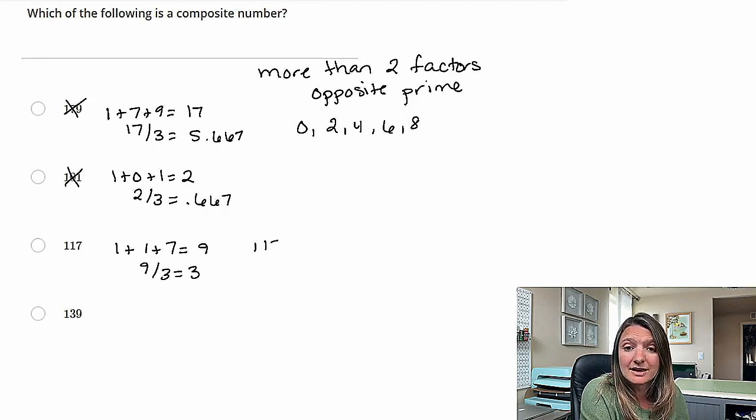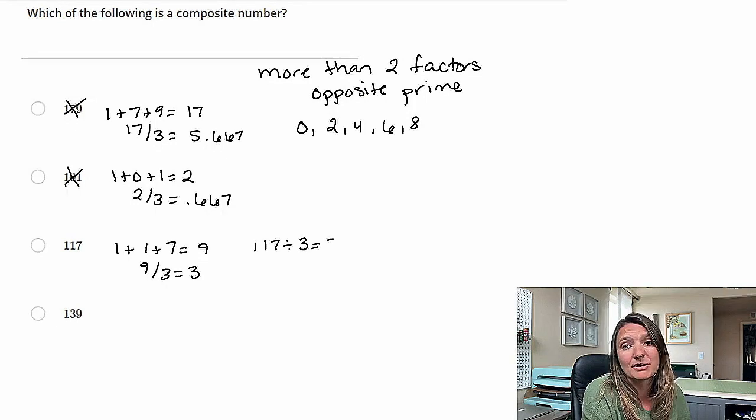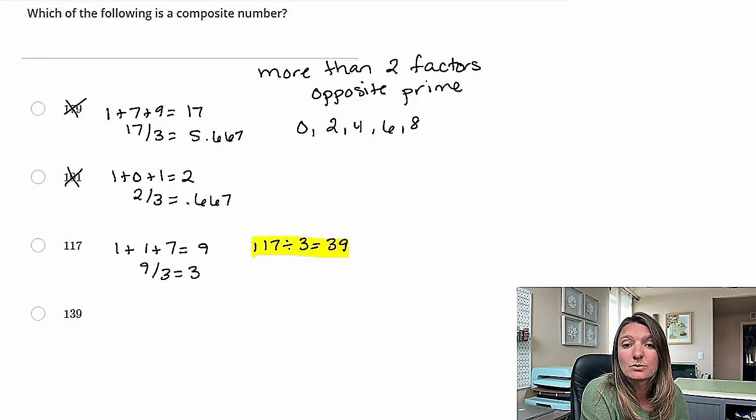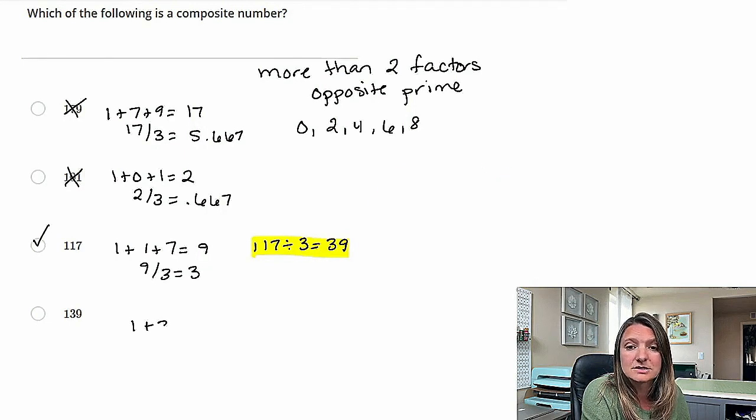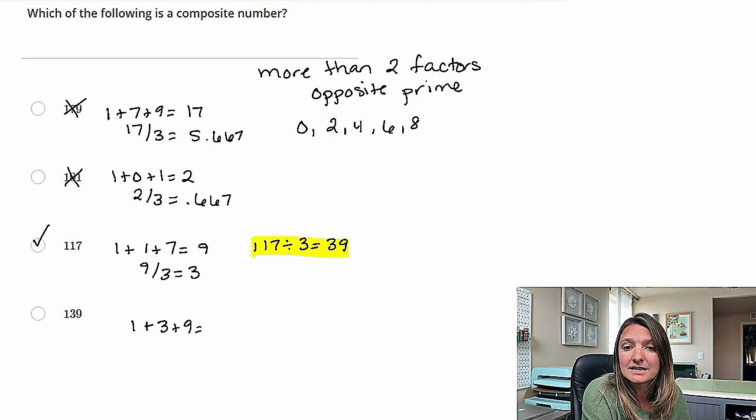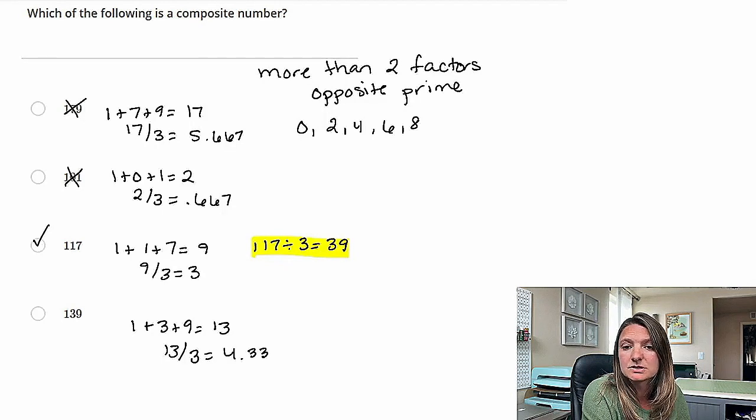And we can double check that by telling you that 117 divided by 3 is actually 39. So that does have more than two factors. So 117 is our composite number. But let's double check that last one. 139. So 1 plus 3 plus 9. If we add those all together, that's 13. Again, 13 divided by 3 is not going to be a whole number. It's going to be a decimal. So 4.33. So that gives us, again, C.